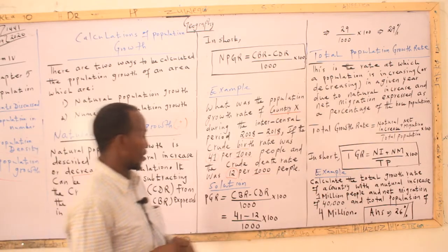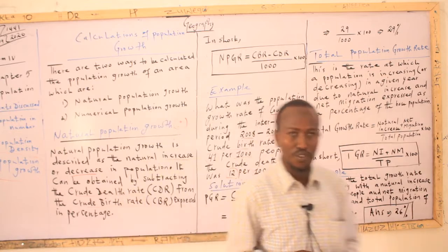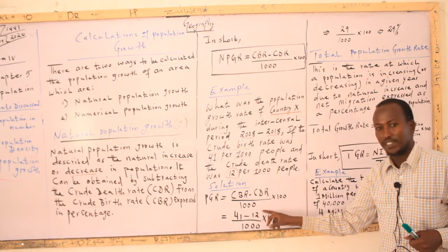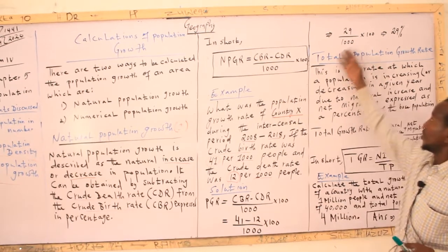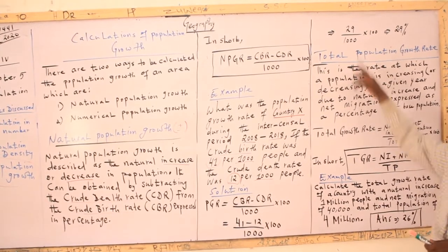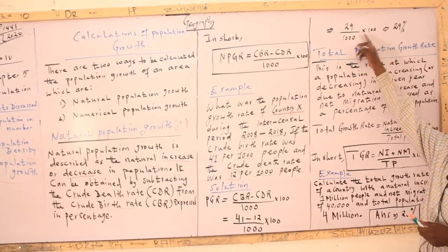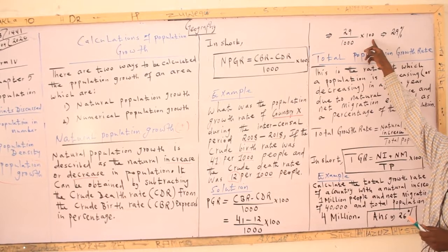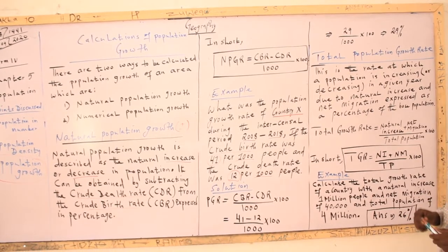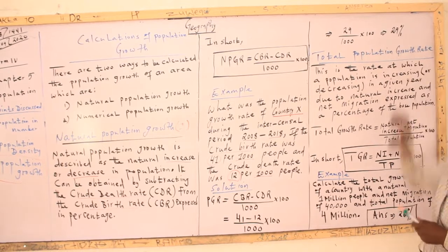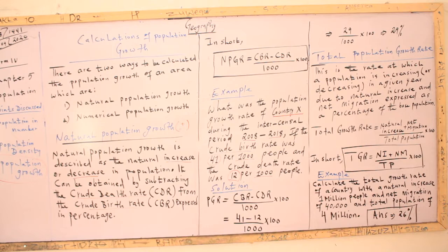In simple calculation, the answer is: 41 minus 29, divided by 1,000, times 100. That gives 2,900 divided by 1,000, which is 2.9%.